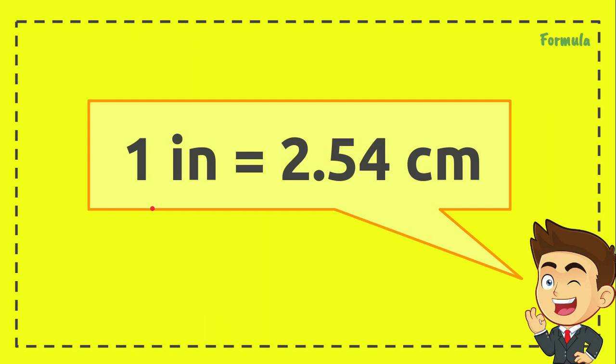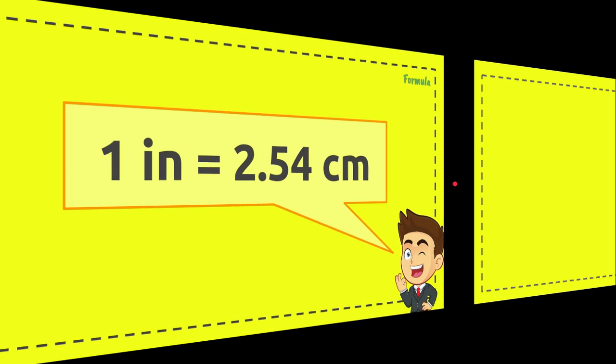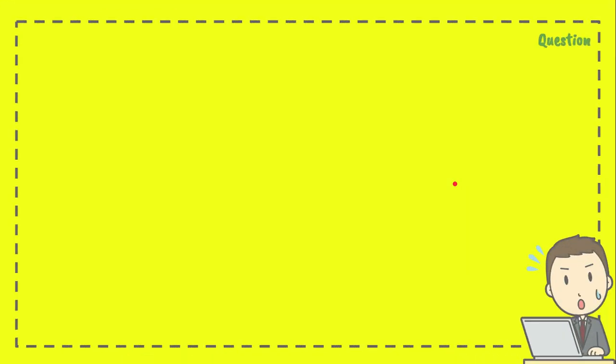Okay, now here is the conversion factor, or we can call it formula: one inch equals 2.54 centimeters.